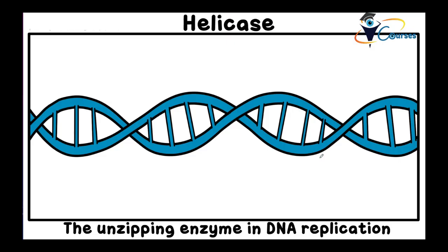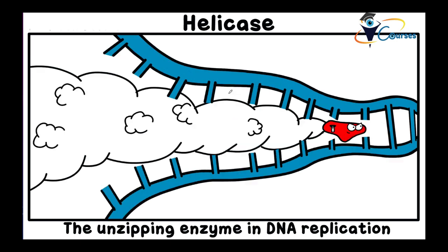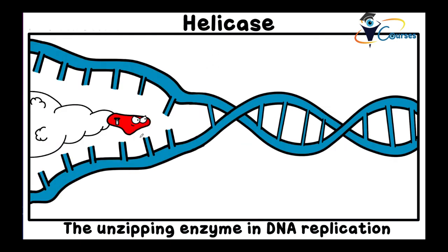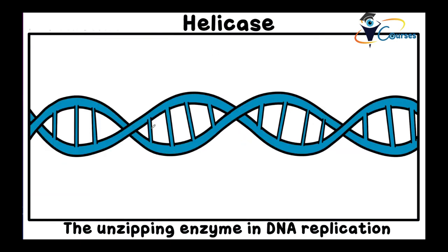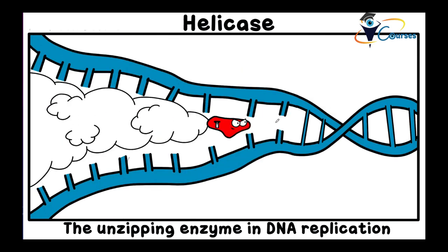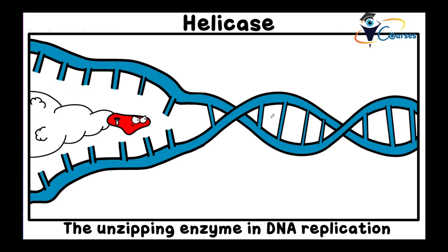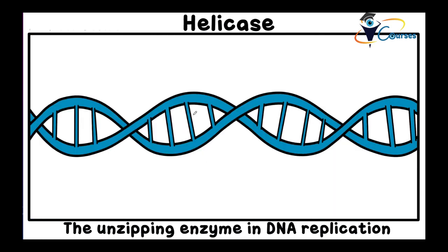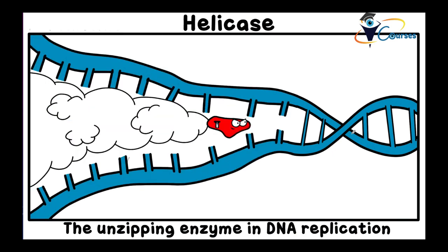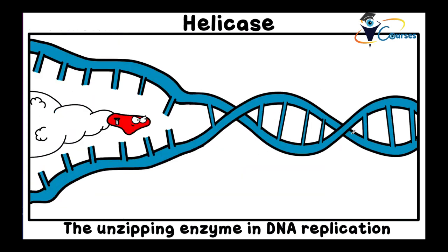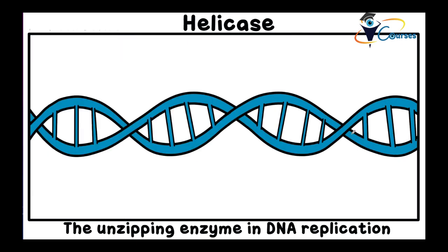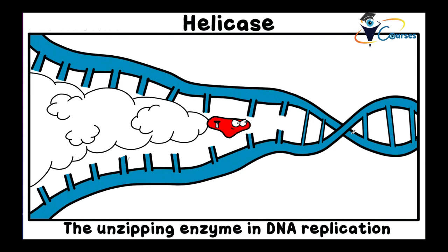The DNA replication process starts with the action of the helicase enzyme. The helicase causes unwinding of the double-stranded DNA, resulting in two single-stranded DNA molecules instead of one double-stranded DNA.